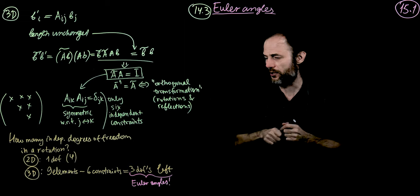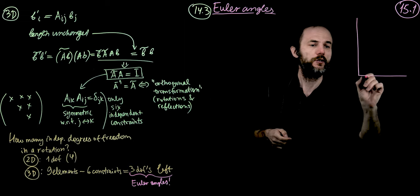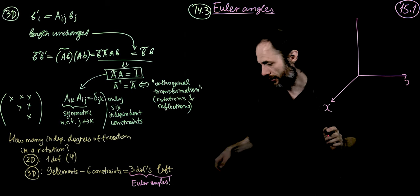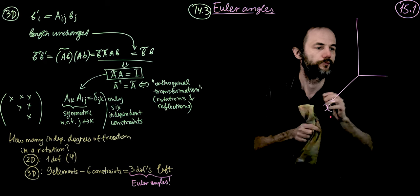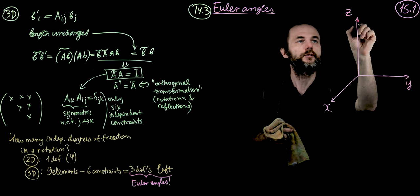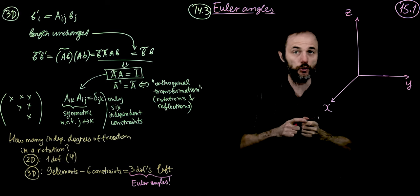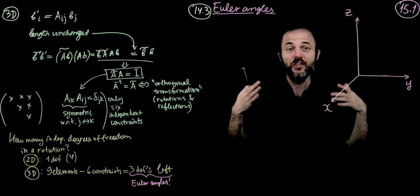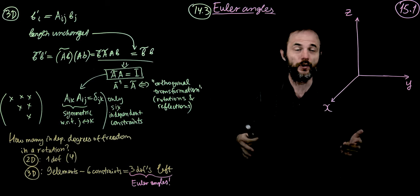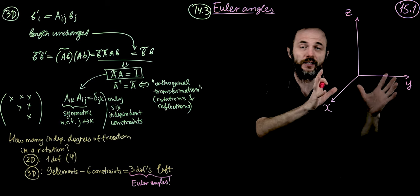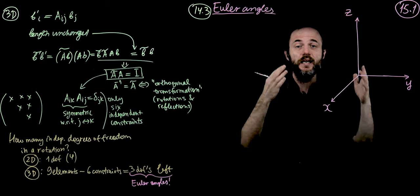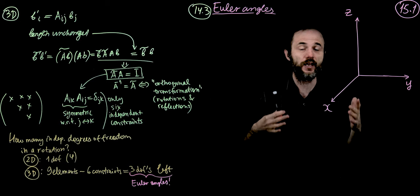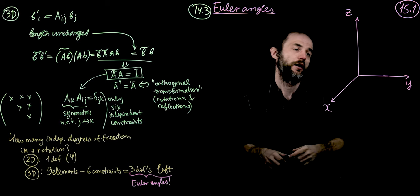Suppose we start with our favorite three-dimensional coordinate system where this is the x-axis, that is the y-axis, and this is the z-axis. We would like to rotate it in some way to get a new orientation representing the new position of the body. We will be discussing passive transformations that describe the rotation of the coordinate system.